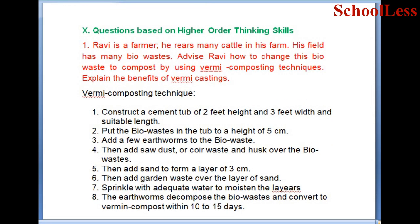Ravi is a farmer who rears many cattle. His field has bio-waste. Advise Ravi on how to change bio-waste into compost using vermicomposting techniques. Process: Construct a cement tub of 2 feet height and 3 feet width. Put the bio-waste in the tub to a height of 5 cm. Add a few earthworms to the bio-waste. Then add sawdust or coir waste and husk over the bio-waste. Add sand to form a layer of 3 cm. Add garden waste over the layer of sand. Sprinkle with adequate water to moisten the layers.